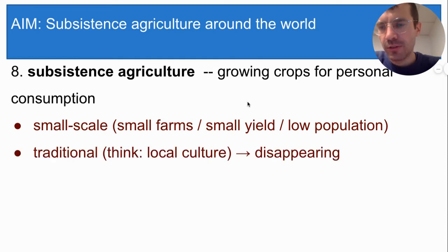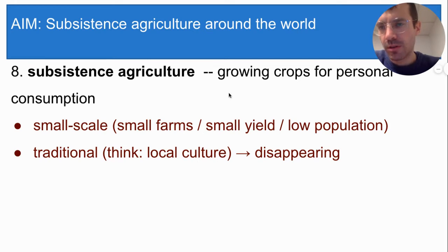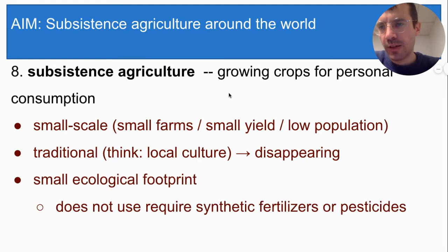Subsistence agriculture also uses traditional methods that have been practiced for thousands of years. Like other local traditions, methods of subsistence agriculture, including all of the ones that you're going to learn about in this video, are rapidly dying out as they are replaced by more commercial methods of agriculture. Finally, subsistence agriculture has a small ecological footprint because of its small scale and because it does not promote the use of synthetic fertilizers or pesticides. Instead, farmers use different techniques to grow food without exhausting the soil, and I want you to pay attention to those techniques as you learn about each of the following types of subsistence agriculture.